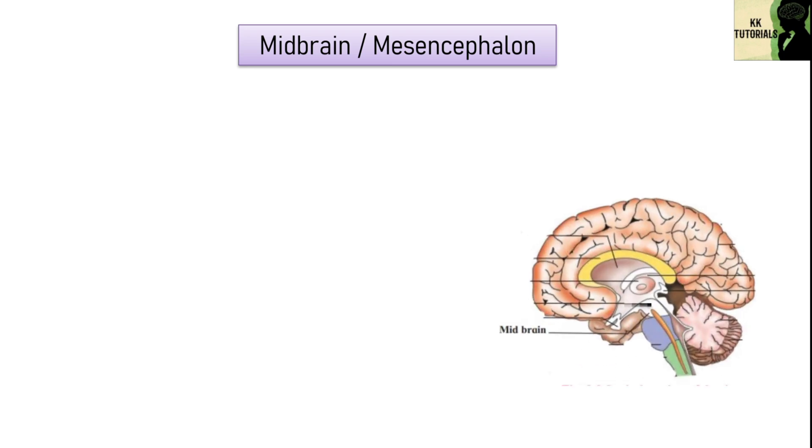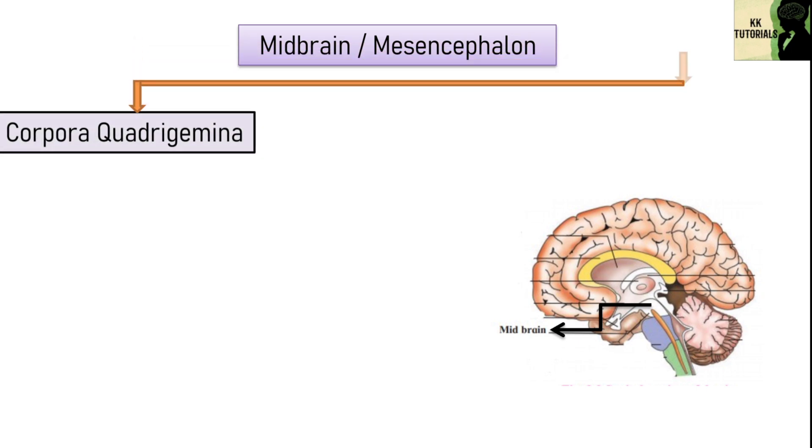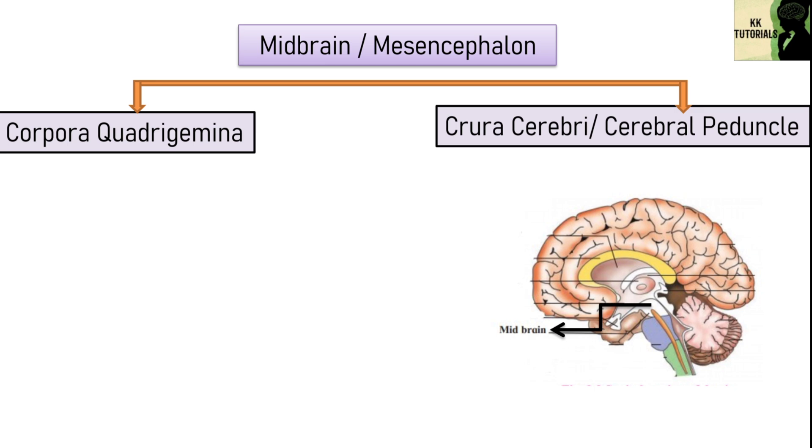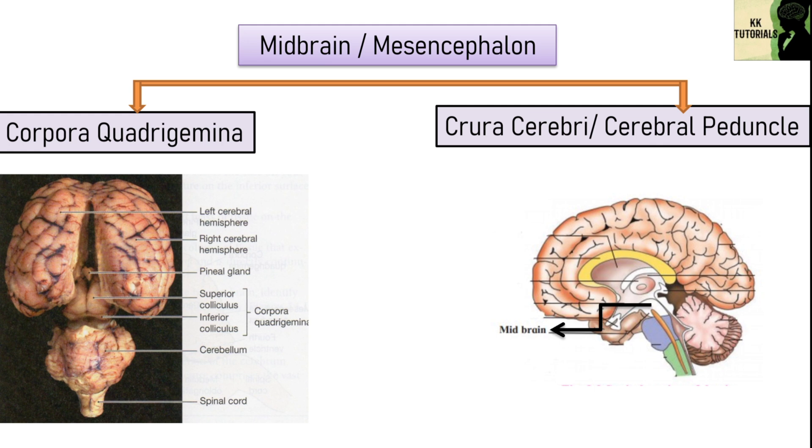Another part of brain is midbrain, also called as mesencephalon. It is located between the diencephalon and pons varoli. From the image, you can see the location of midbrain. It consists of two parts, corpora quadrigemina and crura cerebri, also called as cerebral peduncle. Corpora quadrigemina are four rounded elevations on docile surface of midbrain. These two superior colliculi are involved in visual reflexes and two inferior colliculi are for auditory reflexes.